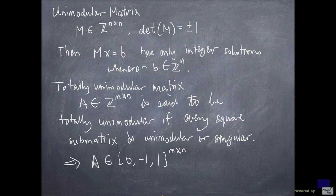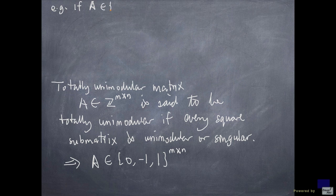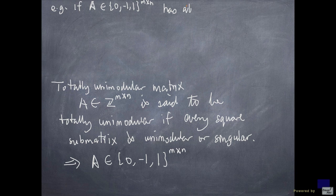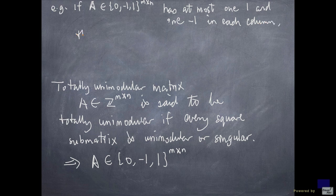Okay, so let's look at an example. If A is a 0, minus 1, 1 matrix, has at most one 1, and one minus 1 in each column, then A is totally unimodular.